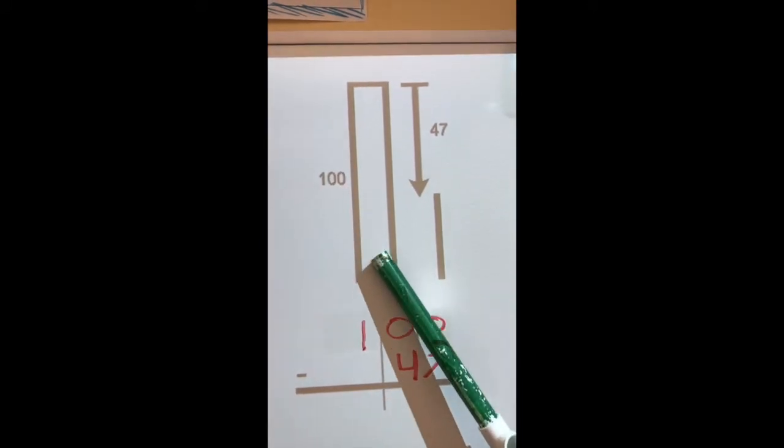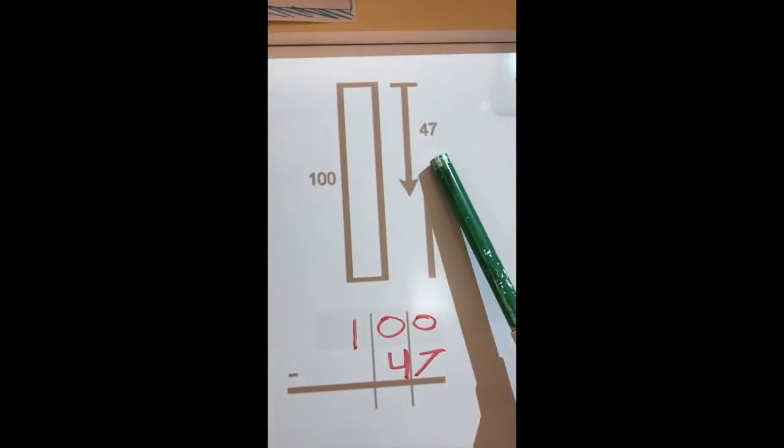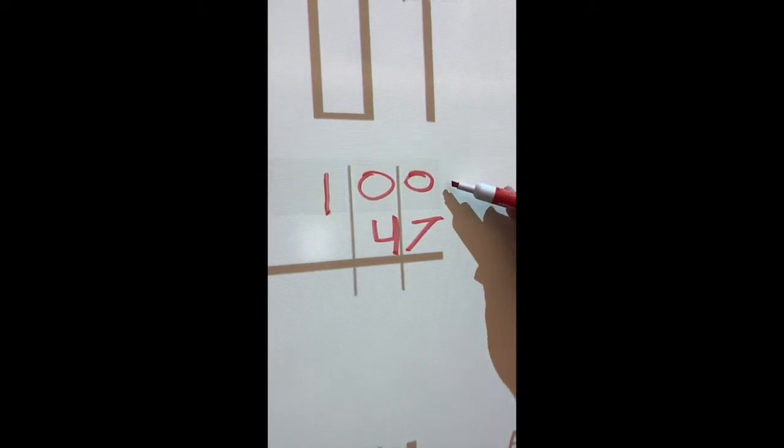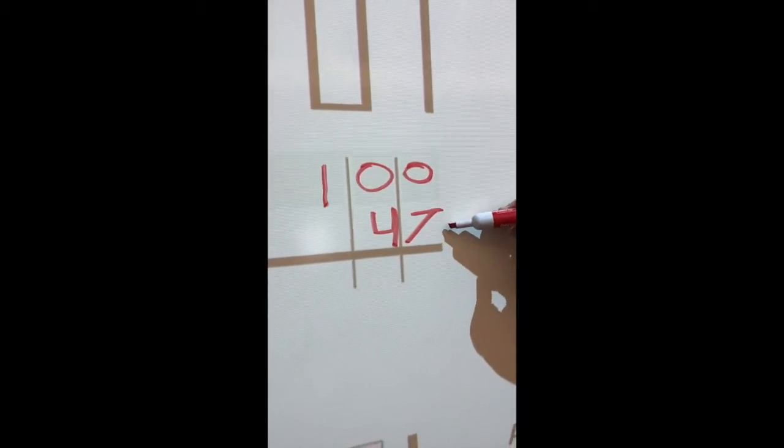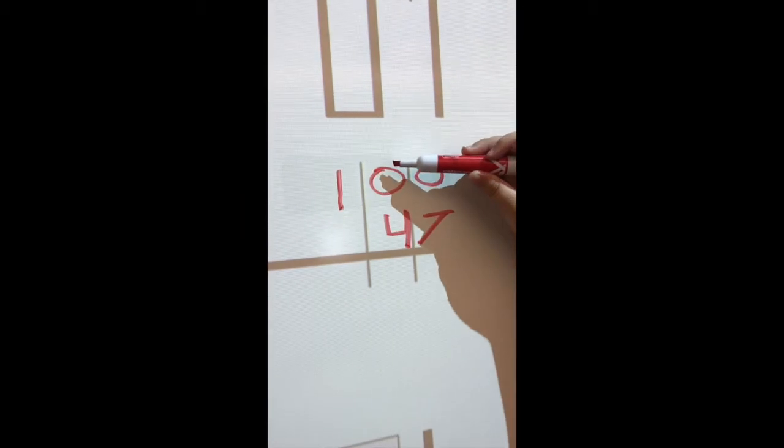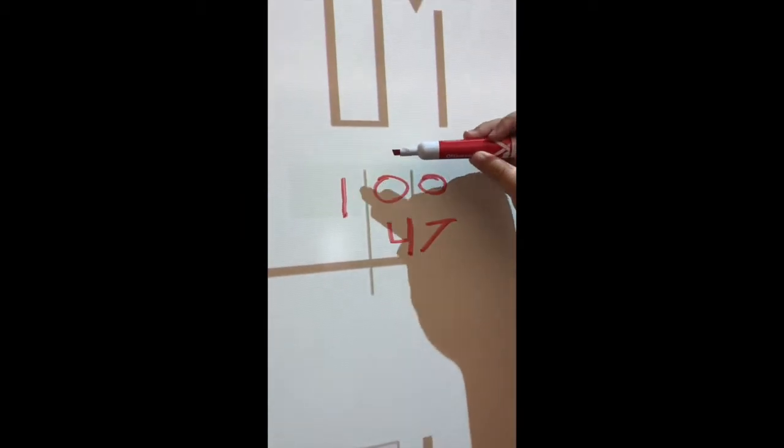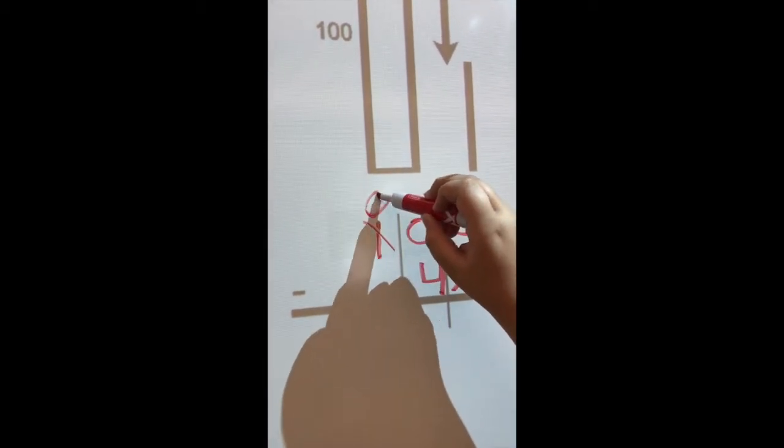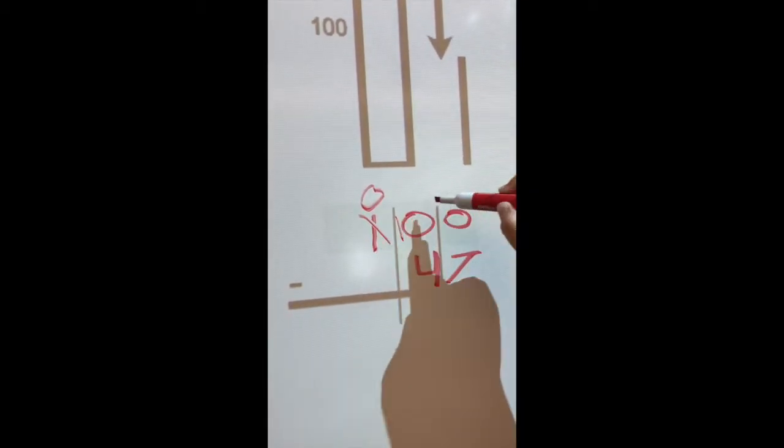This is 100 feet tall, so we're taking away 47. I have 0 ones, and I'm trying to take 7 away, and there's nothing here, so I have to go to the hundreds, cross out the 100, that's a 0 now, this is a 10.